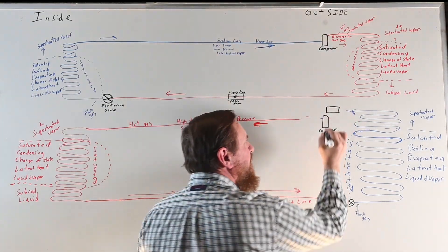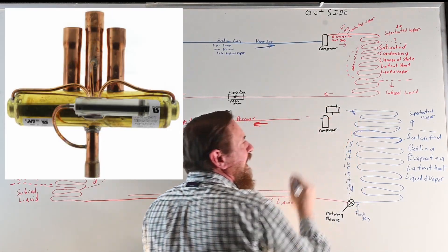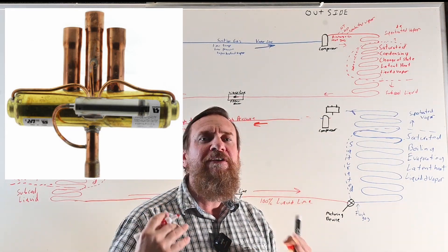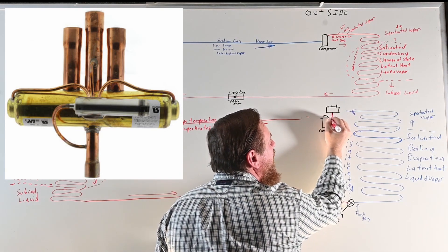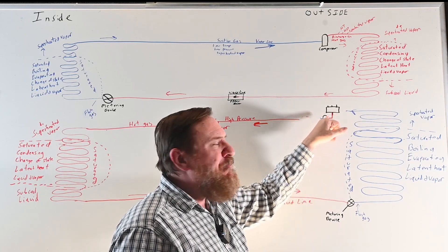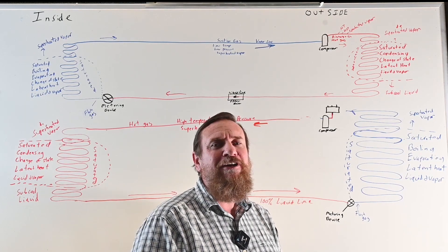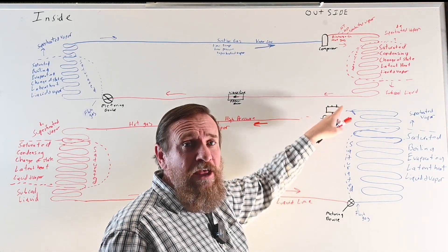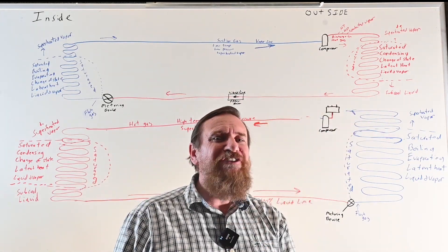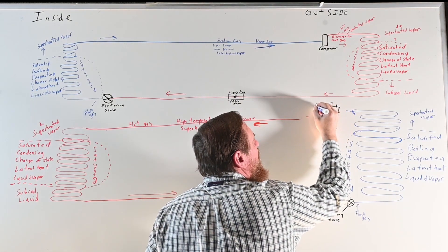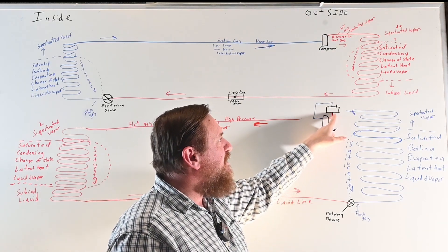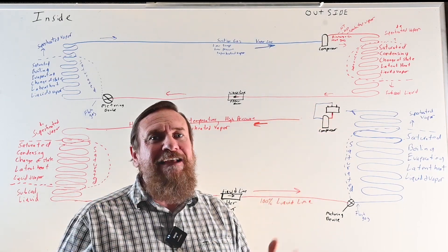This reversing valve has three pipes on one side and one pipe on the opposite side. The pipe that has only one pipe by itself is always the discharge gas — high temperature, high pressure, superheated vapor, always. If you look at any reversing valve and there's one pipe by itself, it goes straight to the compressor discharge. On the other side, the pipe of three — the one in the very center — is always going to be suction, what we call true suction. So the discharge line always goes to the one by itself, and the center pipe always goes back to the compressor suction. That's half the battle of the reversing valve.